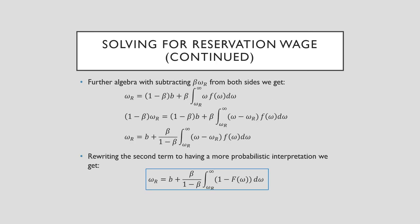Further algebra with subtracting beta*omega_R, this discounted reservation wage from both sides, we get the following result. With further algebra, we can get a more probabilistic interpretation: omega_R = b + beta/(1-beta) times this distribution of all wages above omega_R.